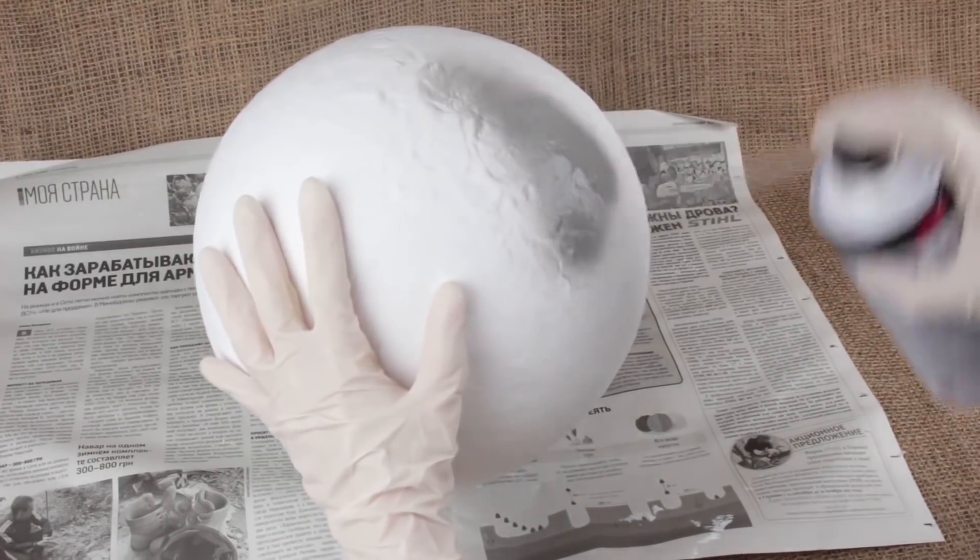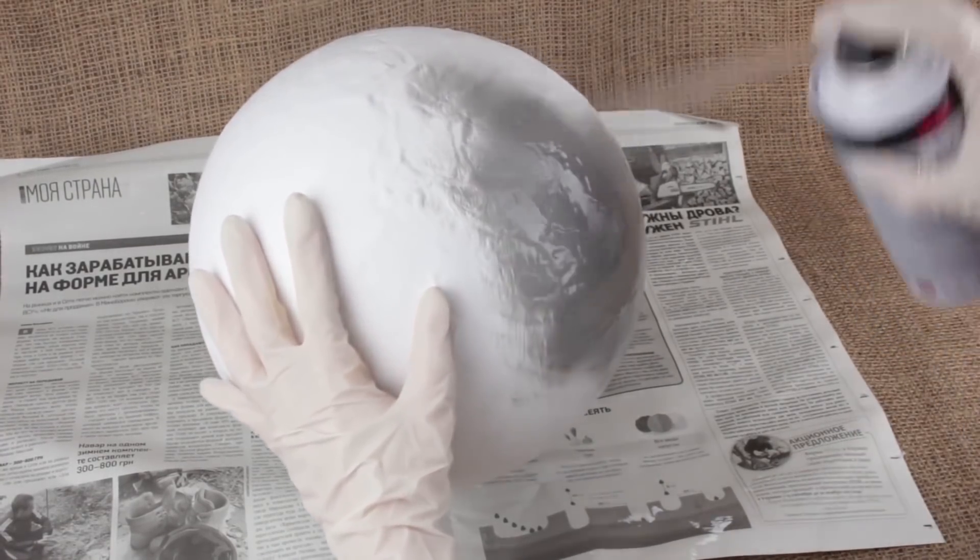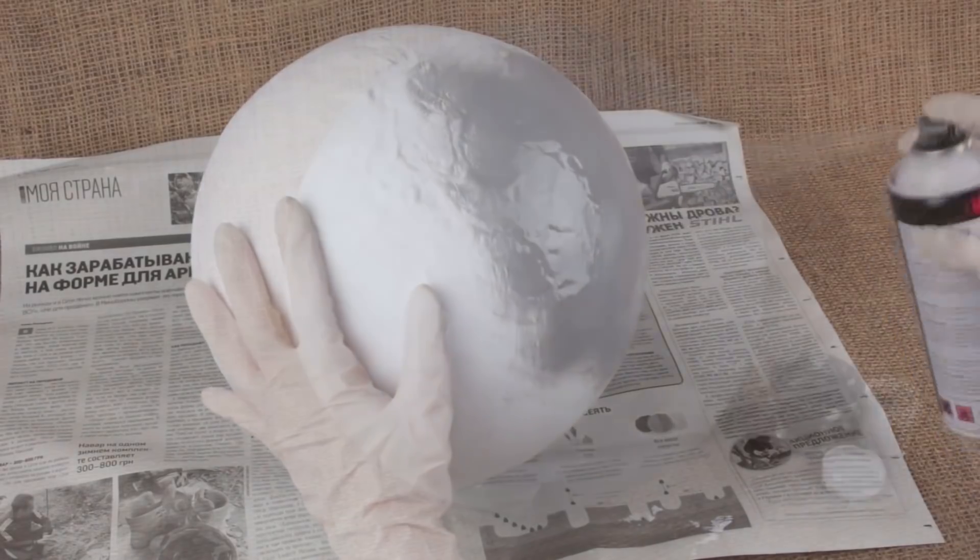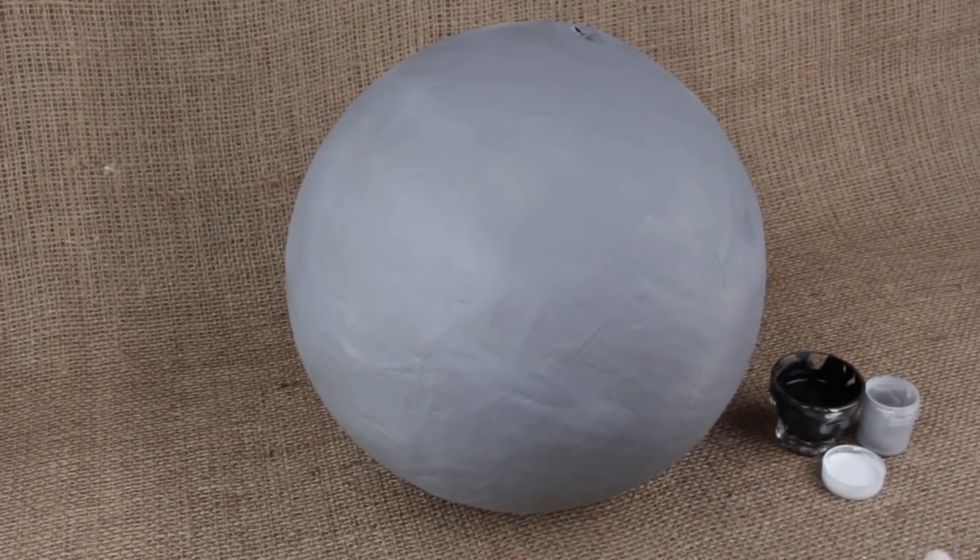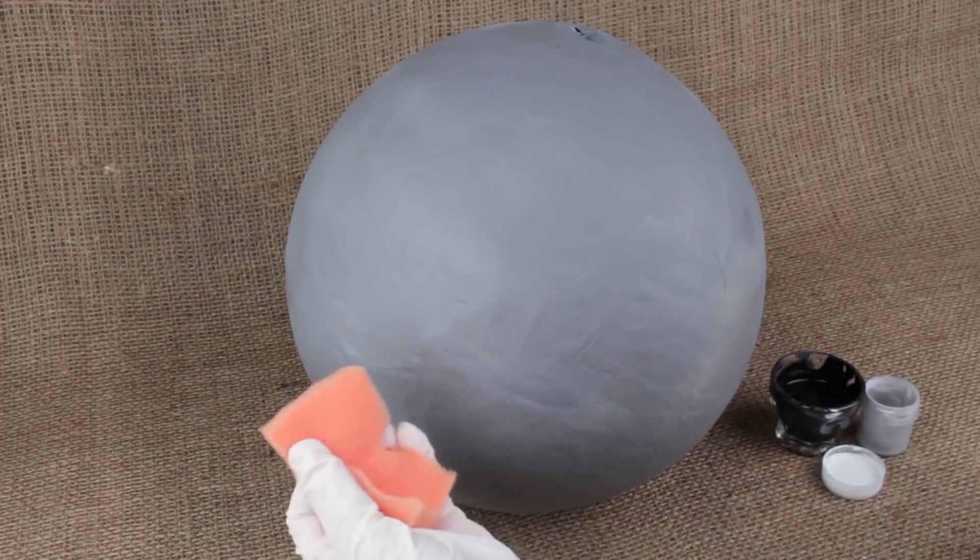Cover the pinata with a gray spray color. Choose a fast dry paint and air the room well. When the coat is dry, take acrylic paints of black, gray, and white colors.